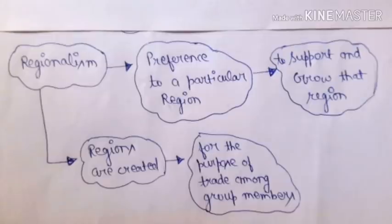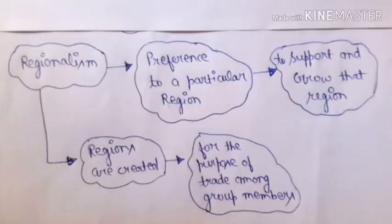Regions are created for the purpose of trade among group members, so that trade in that particular region can be boosted and external barriers or problems can be faced together. Regionalism means preference to a particular region to support and grow that region, for the purpose of trade among group members. You should remember this diagram for your exam.